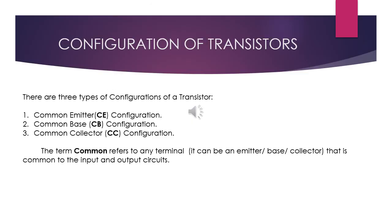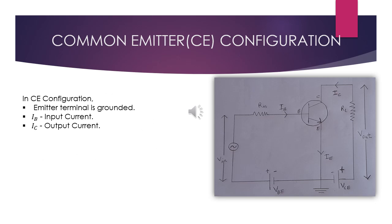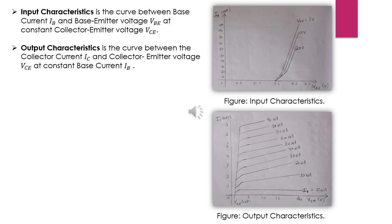There are three types of circuit configurations for operating a transistor: common base, common emitter, and common collector configuration. The term 'common' refers to any terminal — emitter, base, or collector — that is common to both the input and output circuit. In common emitter configuration, the emitter is grounded; the base current is the input and the collector current is the output. The input signal is applied between base and emitter, and output is taken from the collector-emitter circuit. The input characteristic is the curve between base current and base-emitter voltage at constant collector-emitter voltage, and the output characteristic is the curve between collector current and collector-emitter voltage at constant base current.